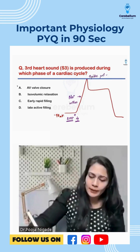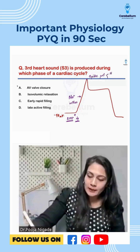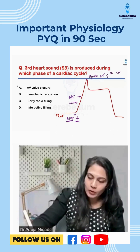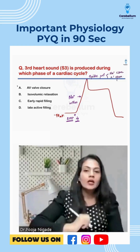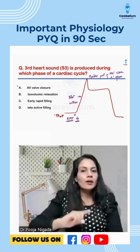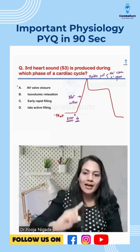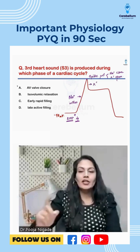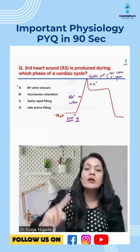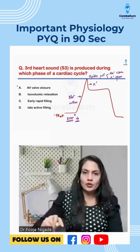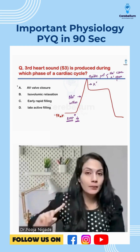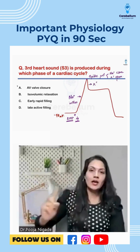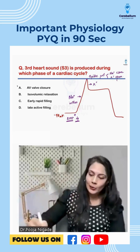As soon as I reach the spike potential, I have to do two things: close whatever channels are open. So I close the sodium channels and open the potassium channels. Potassium causes repolarization — but there is a twist in the story.